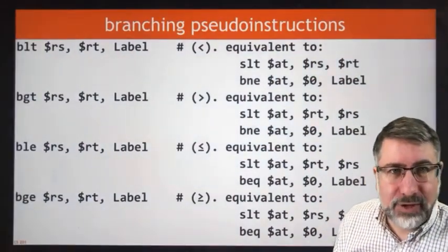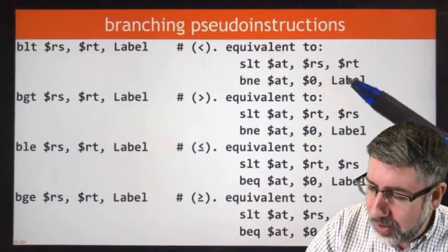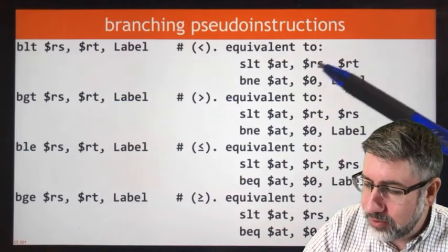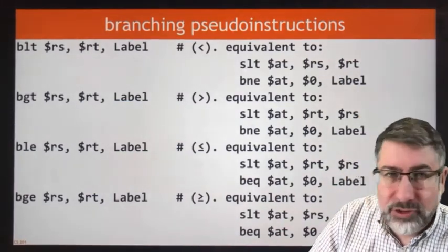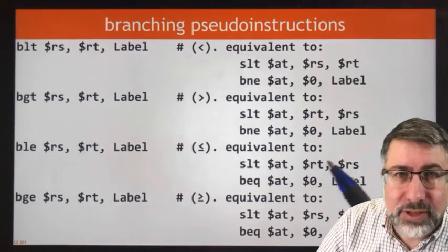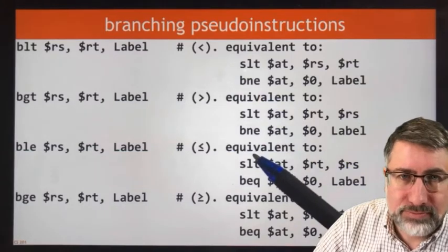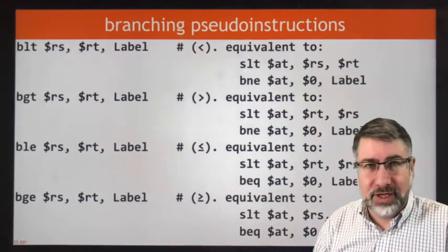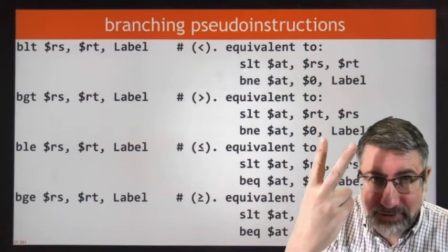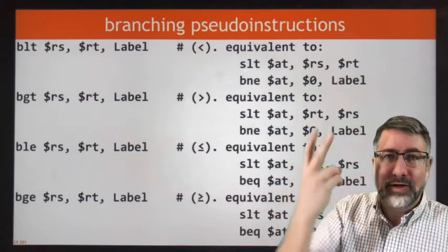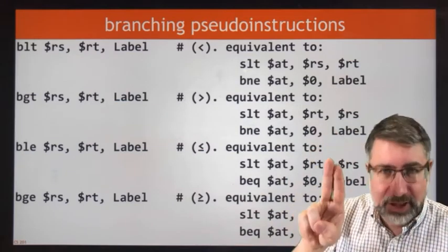We can branch less than, branch greater than, branch less equal, branch greater equal. These are equivalent to a set and a branch. The order of the registers that we compare and whether we're branching on not equal or equal gives us the four different possibilities: compare rs rt and branch not equal, compare rt rs and branch not equal, compare rt rs and branch on equality, and compare rs rt and branch of equal.